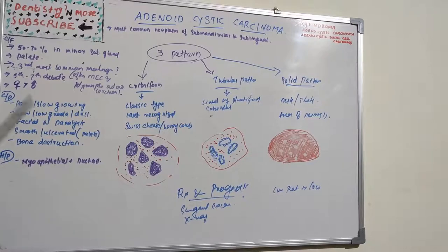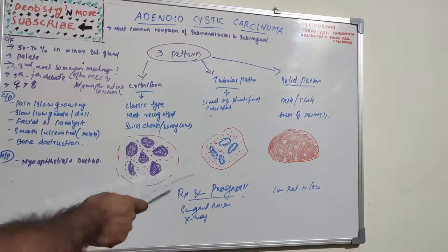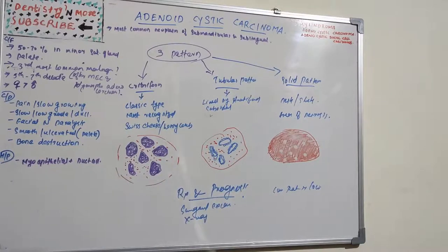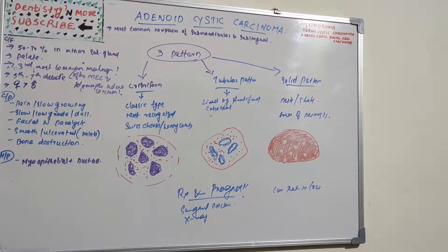Regarding treatment and prognosis, surgical excision is the primary treatment, used in association with radiation therapy. Radiation alone is not recommended. Minor salivary gland tumors carry a worse prognosis than major gland tumors, so palatal tumors are more aggressive with a lower cure rate.